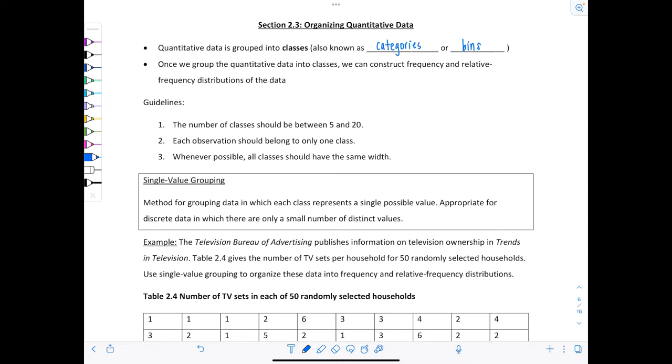Remember, quantitative data is numerical data. Once we group our quantitative data into classes, we can construct frequency and relative frequency distributions, just like we did with qualitative data previously. Some general guidelines: the number of classes should be between 5 and 20. Each observation should belong to only one class, no double dipping. And whenever possible, all classes should have the same width.